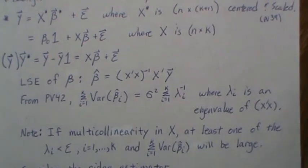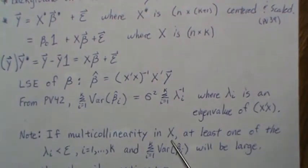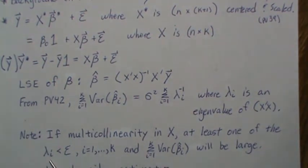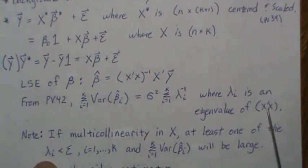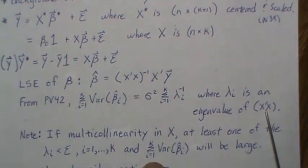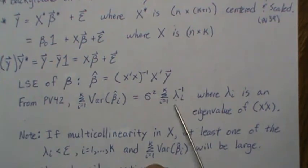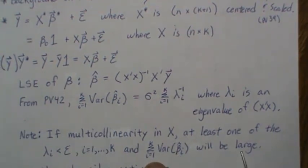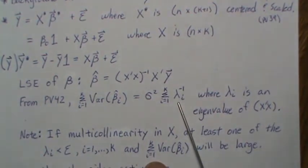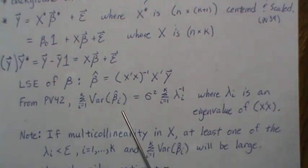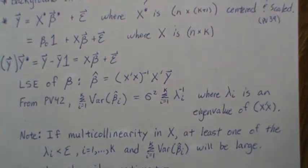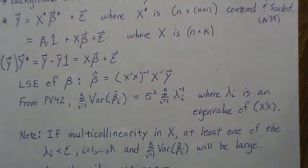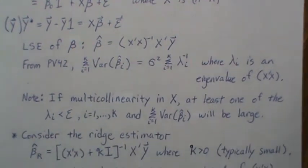If there is multicollinearity in our design matrix, then at least one of the eigenvalues associated with X-transpose X is really small. That makes this sum large, because one divided by a small number is quite large. So the total variance is inflated, and that's not a good property. One way to combat that is ridge regression.